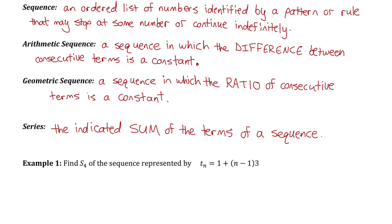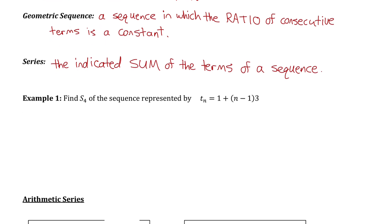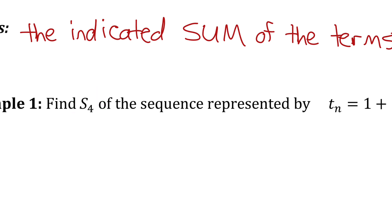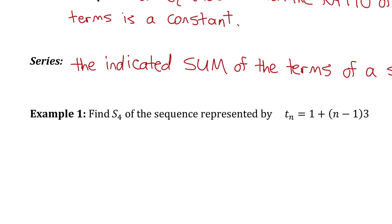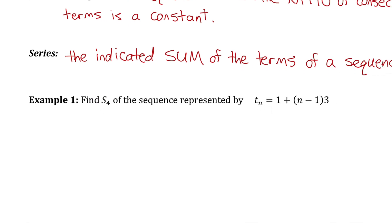Let's do a few examples where we calculate some arithmetic and geometric series. Example 1 — I see this notation right here. That notation means we want the sum of the first four terms of the sequence represented by this formula for each general term. So if I want the sum of the first four terms, I'll start by finding the value of the first four terms. I'll find term 1 by subbing n=1 into my formula: 1 plus (1 minus 1) times 3, which gives me 1 plus 0 times 3, which is just 1.